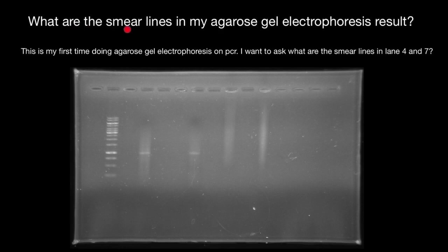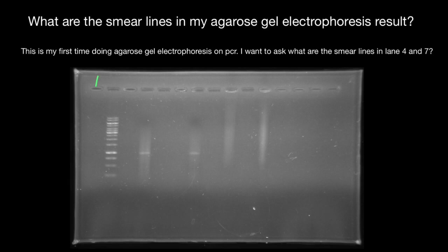What are the smear lines in my agarose gel electrophoresis result? This is my first time doing agarose gel electrophoresis on PCR. I want to ask what are the smear lines in lane four and seven. So here's row number one.